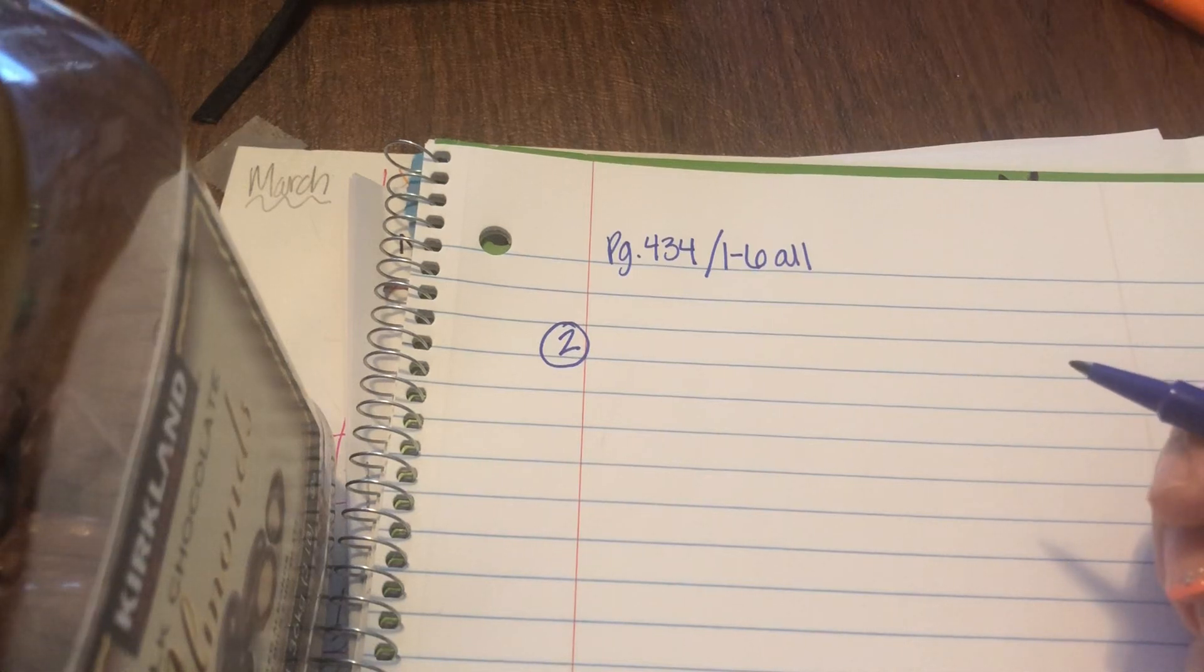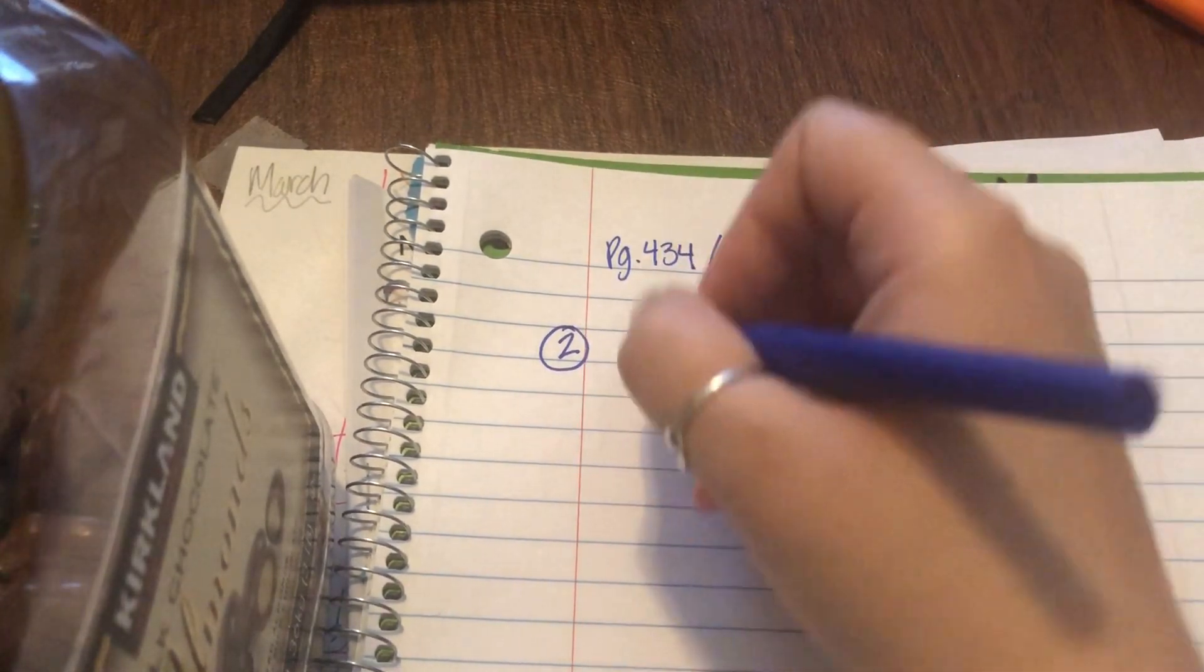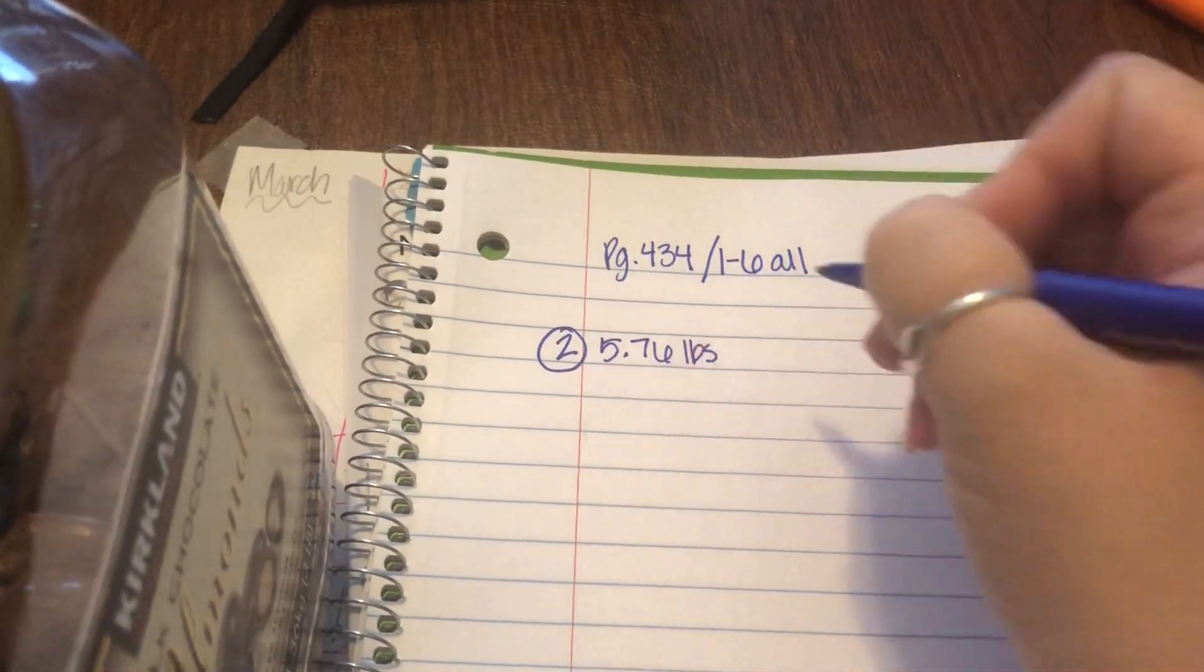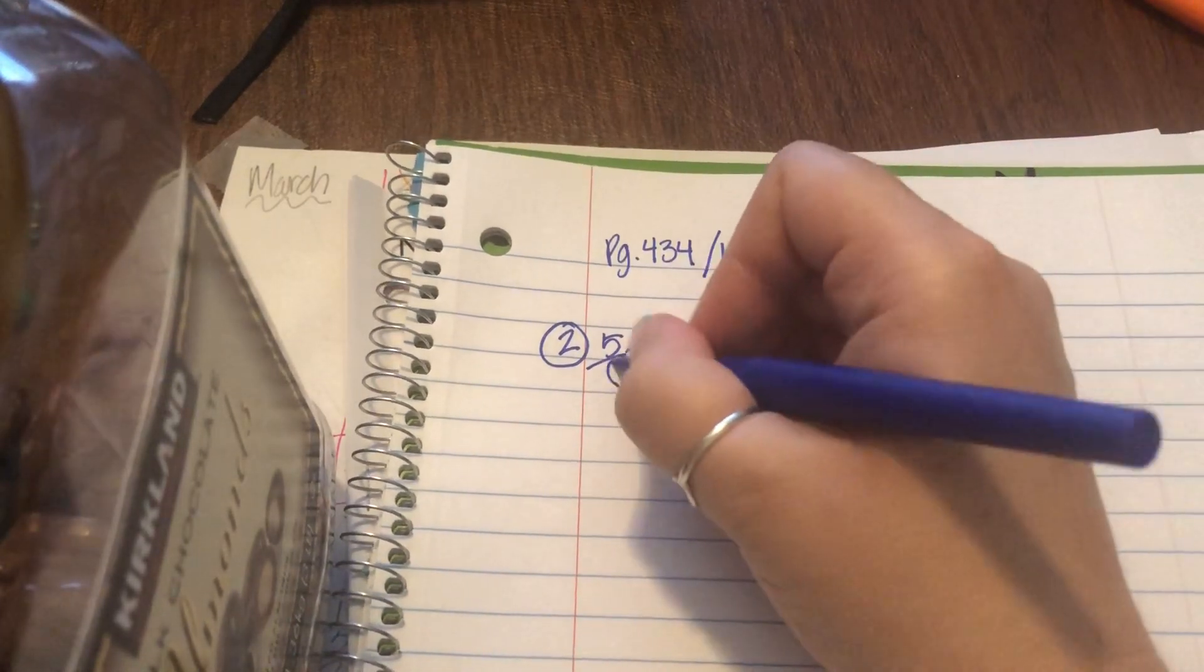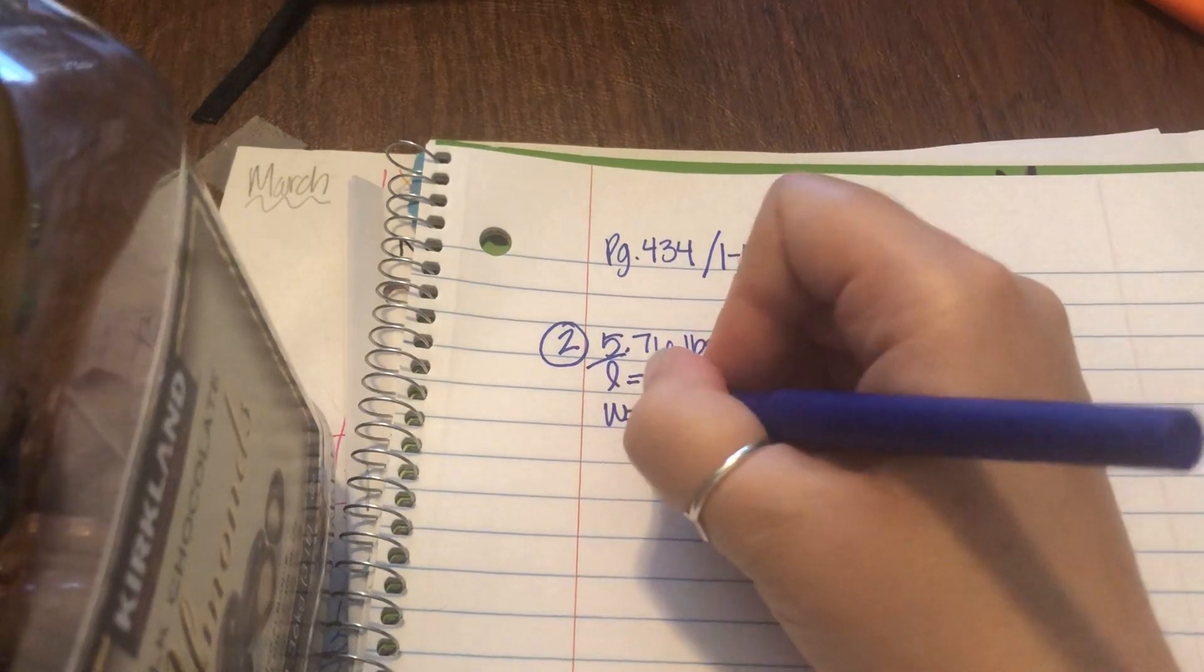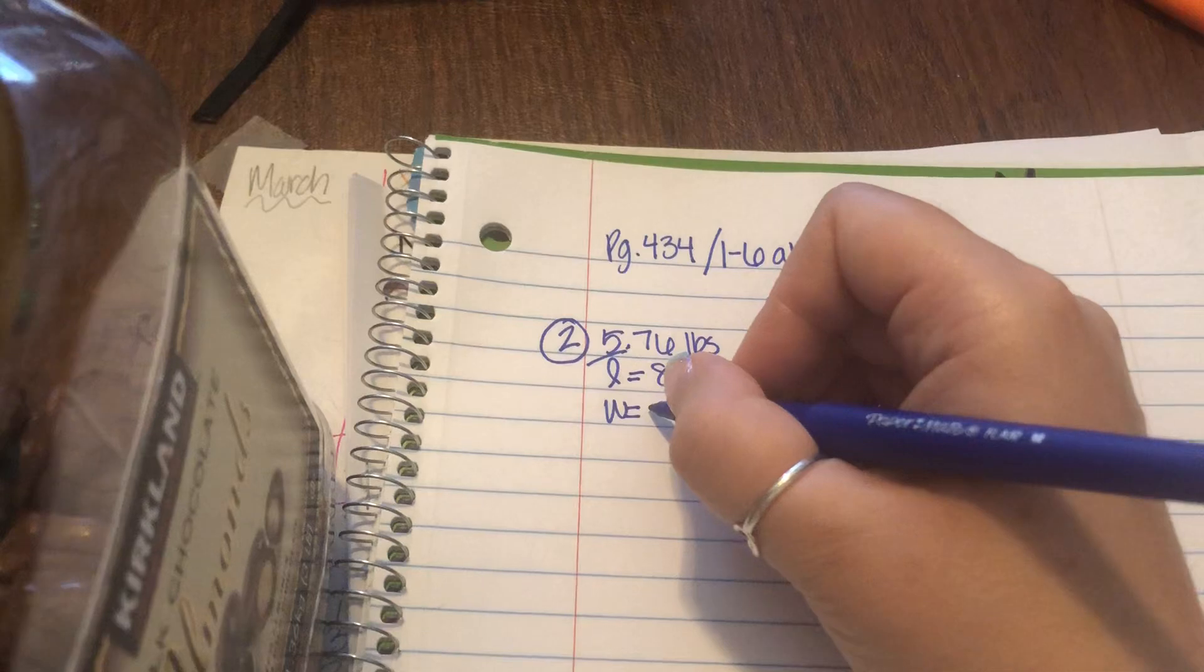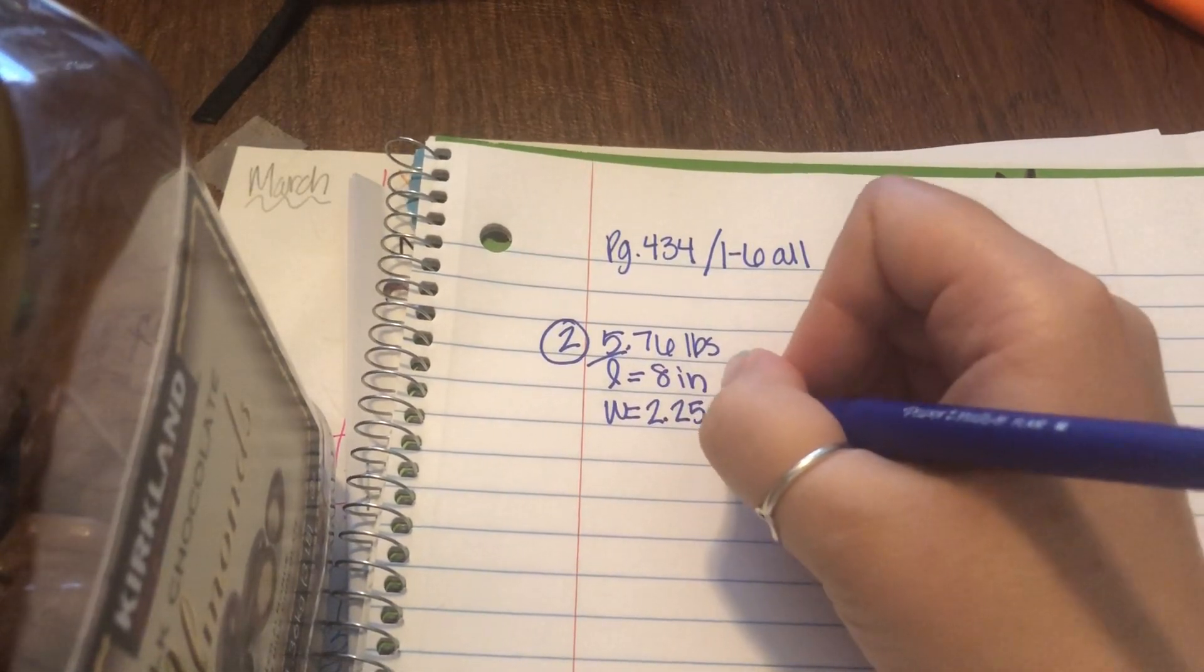The first thing, as you read it, since there's so much information, write down the info as you read. So it says one clay brick weighs 5.76 pounds. The brick is 8 inches long, so the length is 8 inches. The width is 2 1/4, which if you take in your calculator 1 divided by 4, you get 0.25. So 2 1/4 becomes 2.25 inches wide.